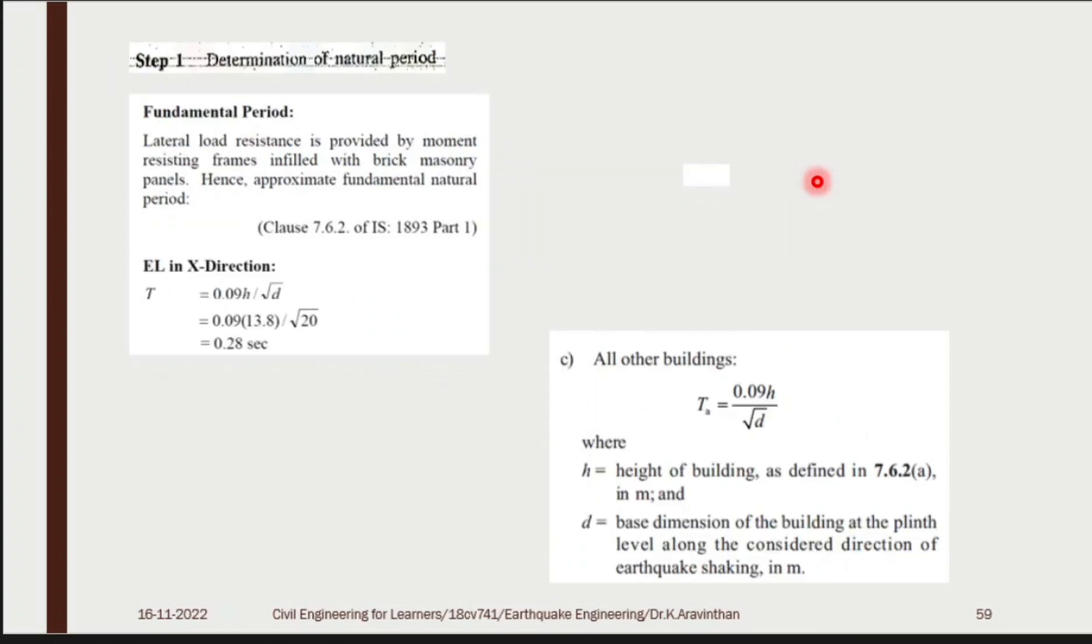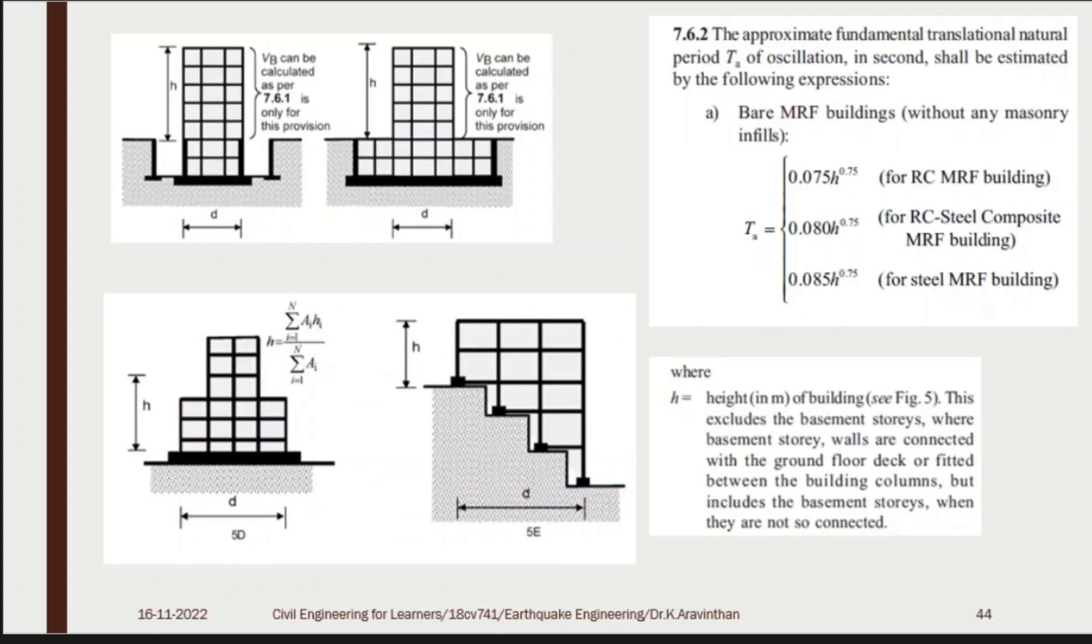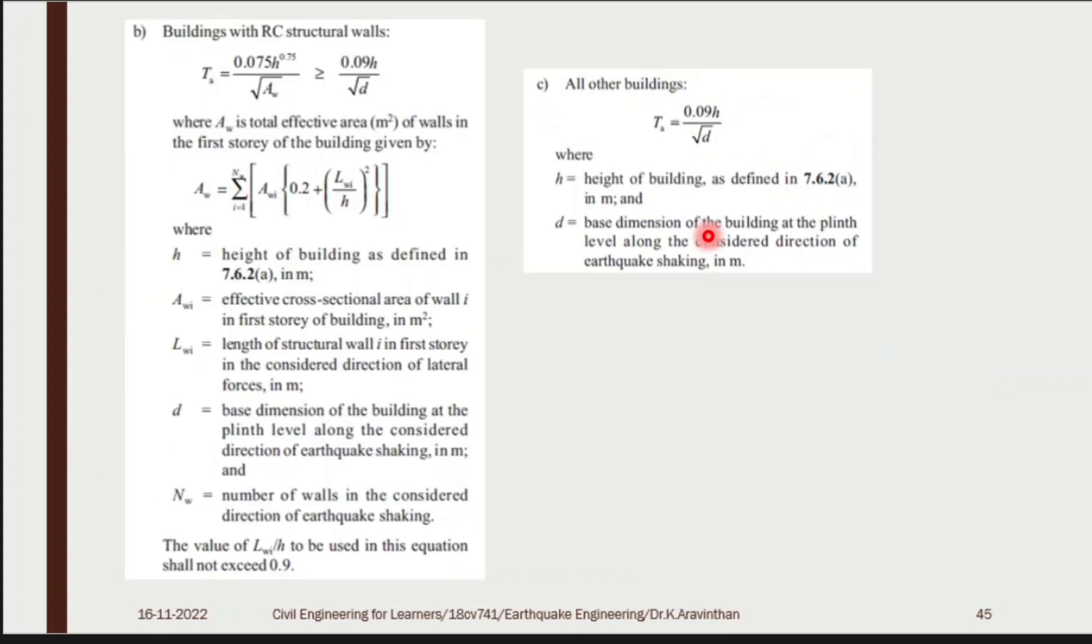Find the natural period of the structure. What is the formula for that? 0.09h by root d for all other buildings. Check in code book 7.6.2: bare moment resisting frame without any masonry infill. Do we have any infill in our structure? Yes, we have. So you should not use this. Building with RC structural wall, this formula. We are not having RC structural wall. We only have masonry bricks. So you can use all other buildings.